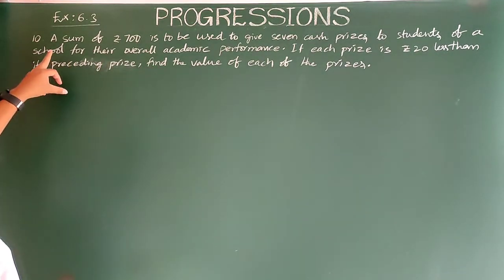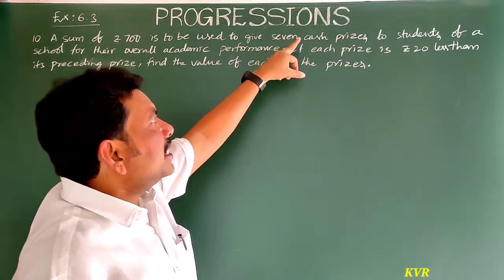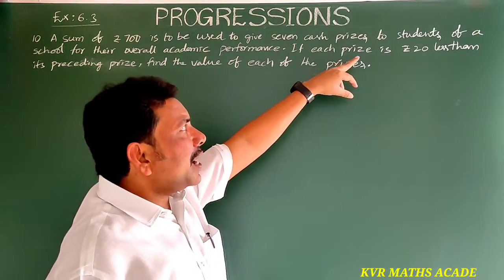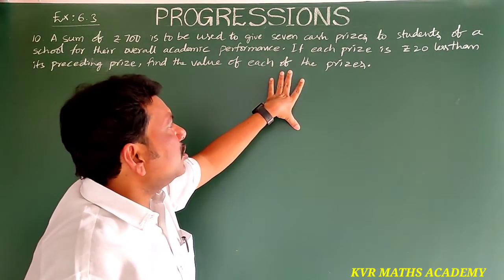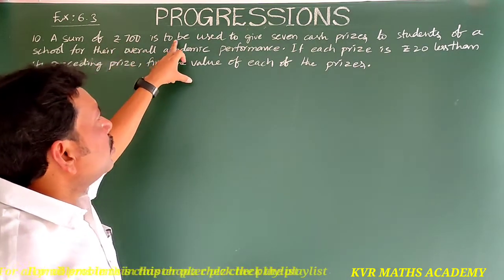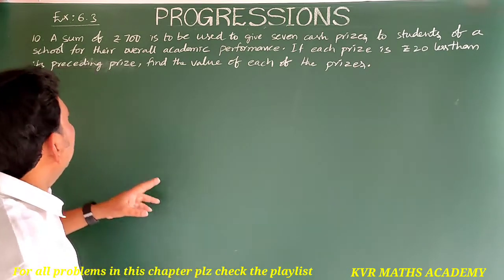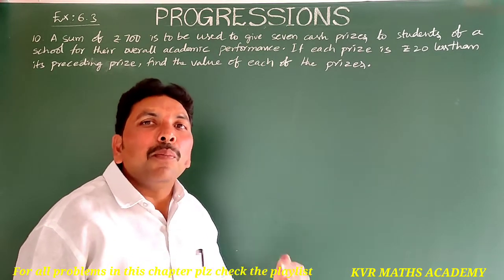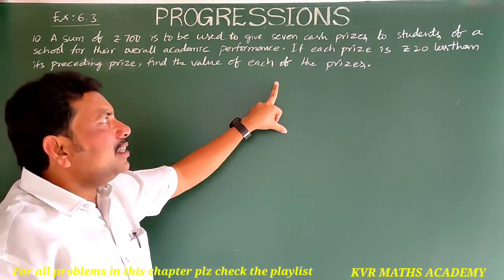This is the 10th question in exercise 6.3. A sum of Rs. 700 is to be used to give 7 cash prizes to students of a school for their overall academic performance. If each prize is Rs. 20 less than its preceding prize, find the value of each of the prizes.